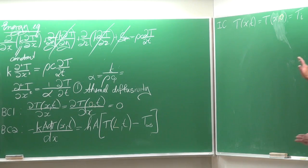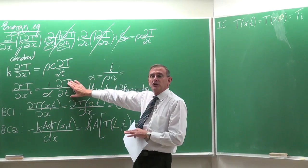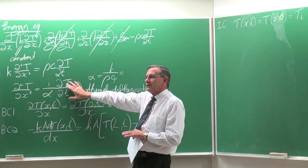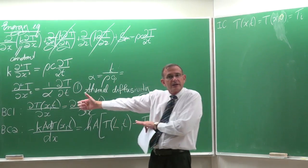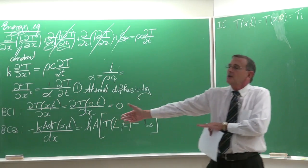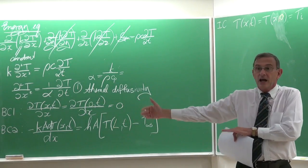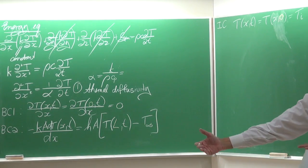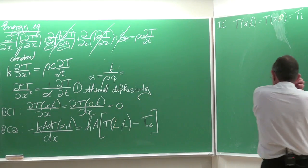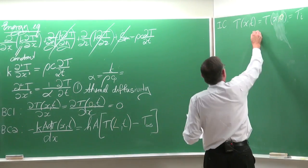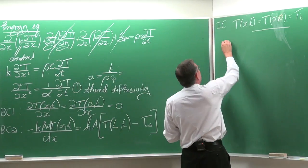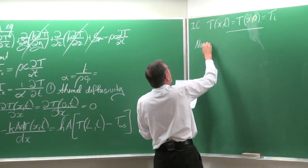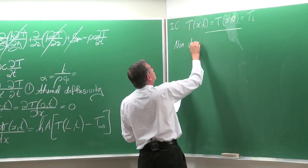This is a simple partial differential equation, but with all these variables nobody can easily solve it directly. It can be solved, however, using a trick: we look at the equation and make it easier by non-dimensionalizing certain terms.